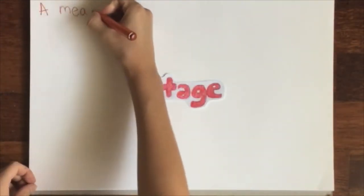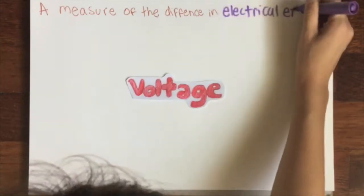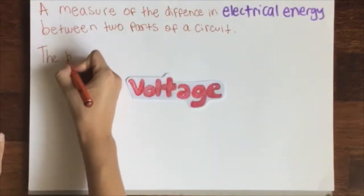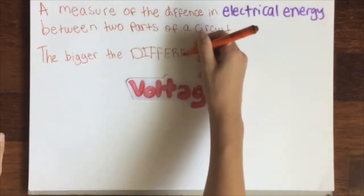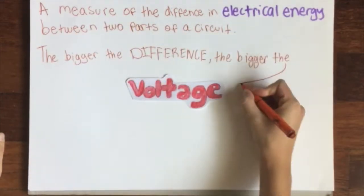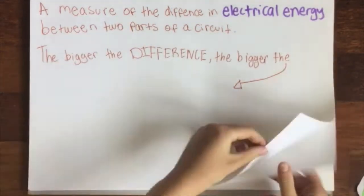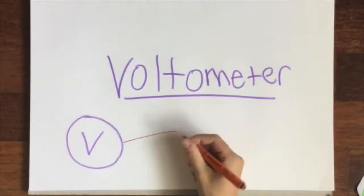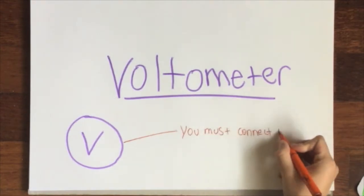Voltage is a measure of the difference in electrical energy between two parts of the circuit. The bigger the difference, the bigger the voltage. The unit for voltage is volts, which are measured using voltmeters. This is the symbol for a voltmeter.